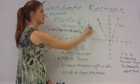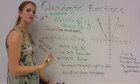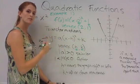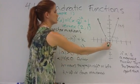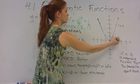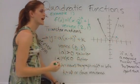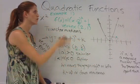So 2, 1, that is my new vertex. That's my new minimum value for this graph here. So I'm going to go 2 and then up 1. So that is the vertex point for my parabola.